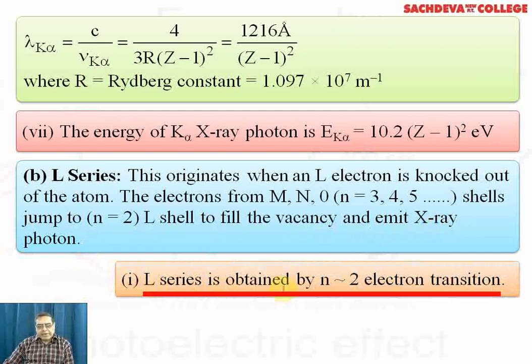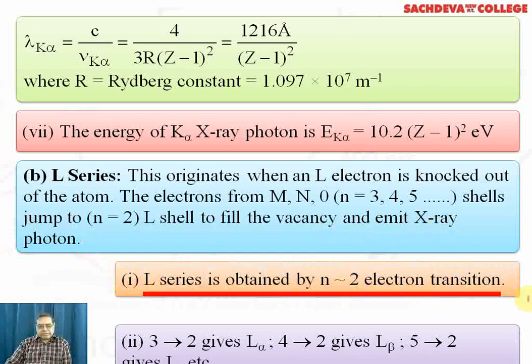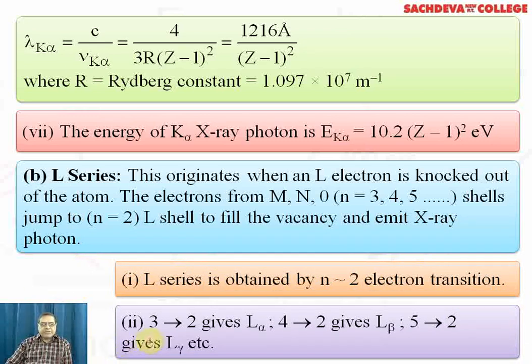L series is obtained by n→2 electron transition. When we speak of transition, electrons are moving from low to higher permitted shell or from higher to lower permitted shell. When electron jumps from lower to higher shell, the atom exhibits absorption spectrum; when it jumps from higher to lower shell, it exhibits emission spectrum. X-rays are a case of emission spectrum.